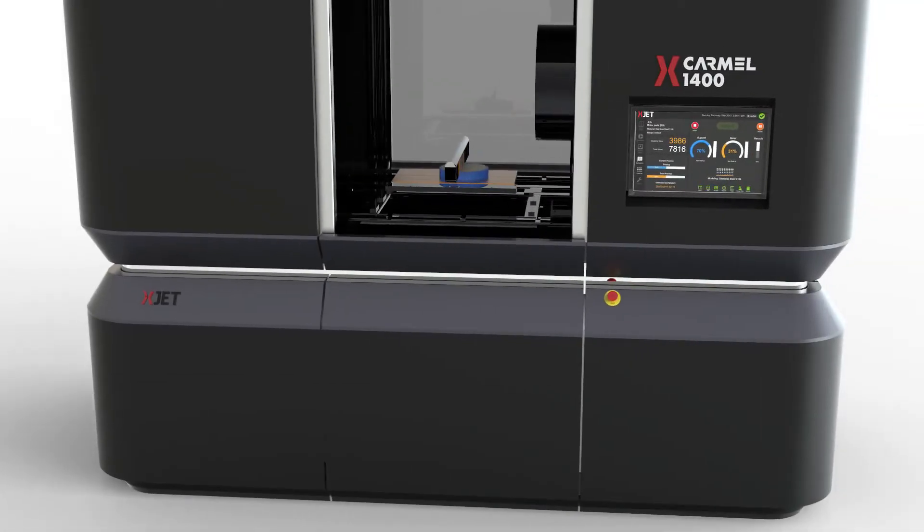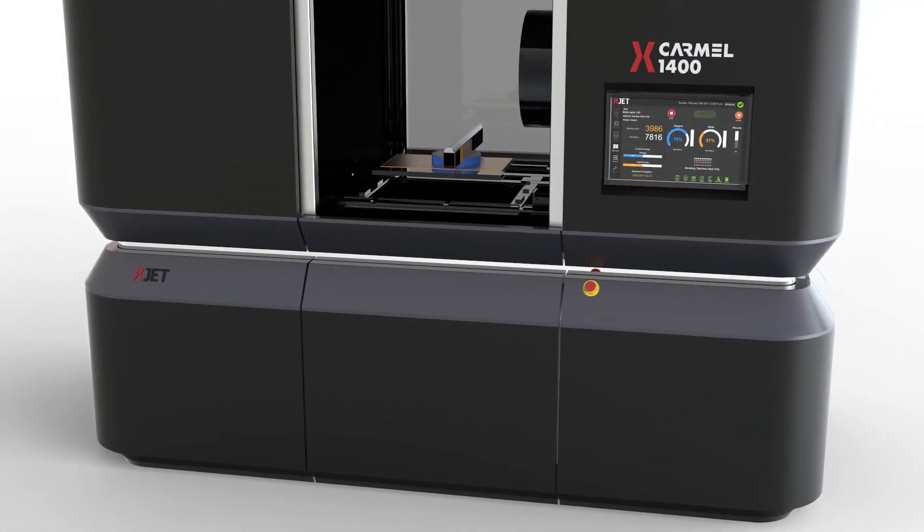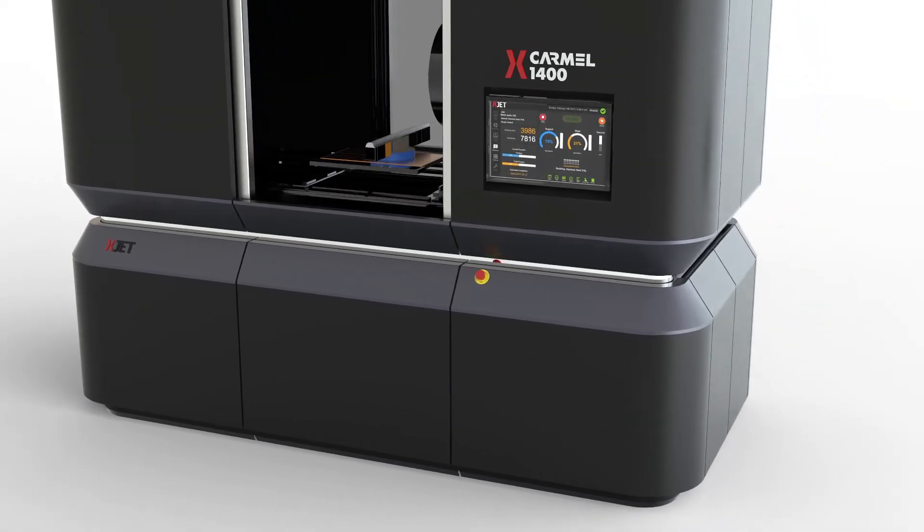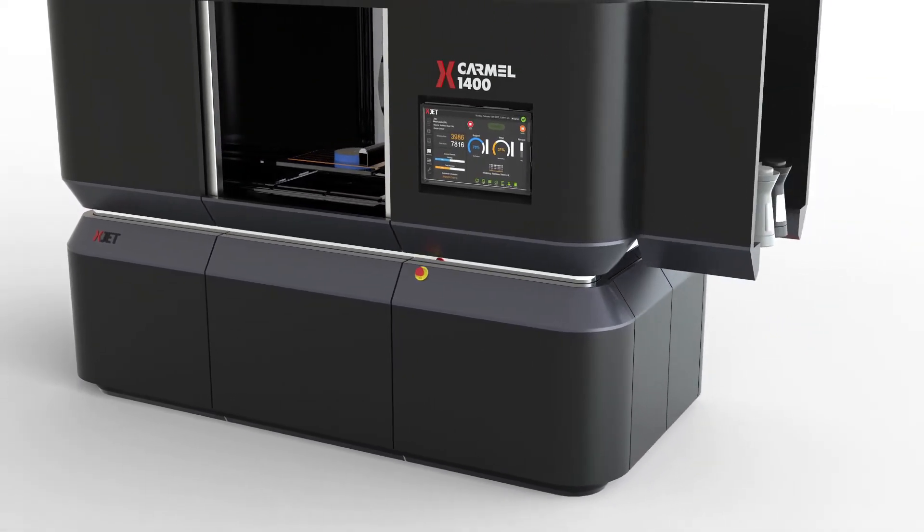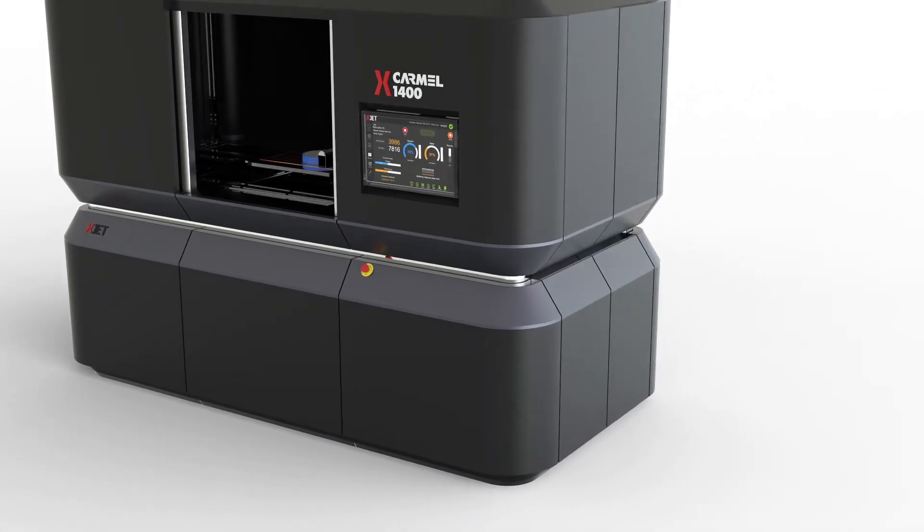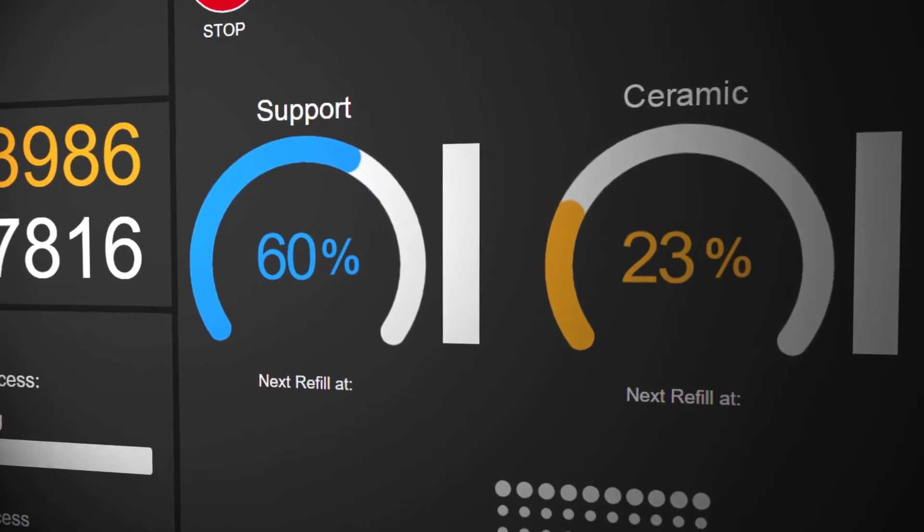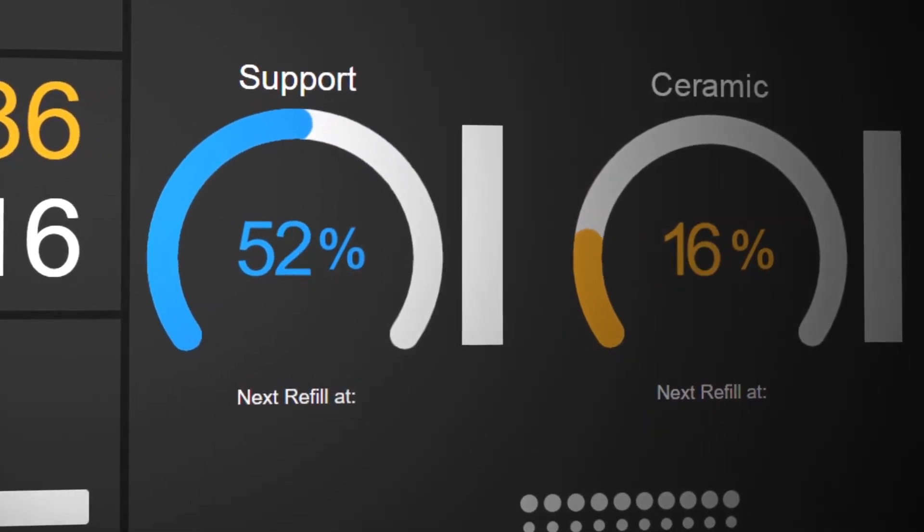So, how does it work? Ceramic materials, packaged within convenient cartridges, are easily and safely loaded by hand into the XJET Carmel AM system. With no need for a powder or liquid vat, the Carmel system uses only the materials required.